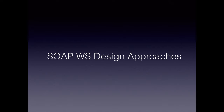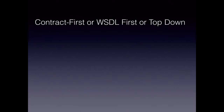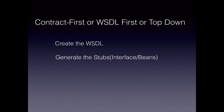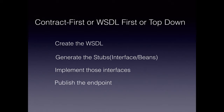The first of the two different SOAP web services design approaches is the contract first, or WSDL first, or top-down approach. This is where we create the WSDL file first, then generate the stubs or the language objects from this WSDL file. We then implement those stubs, use the beans that got generated, and implement our web services endpoint class, which we then publish through a configuration file.